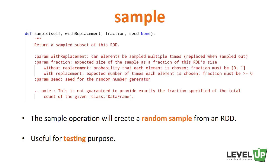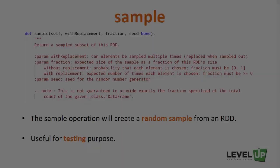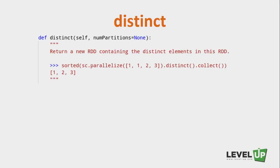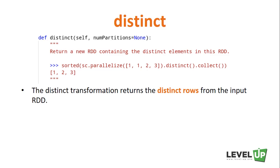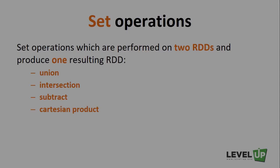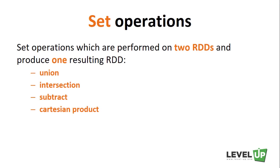The distinct transformation returns only the distinct rows from an input RDD, removing duplicates. Keep in mind that distinct is quite expensive because it requires shuffling all data across partitions. Avoid using distinct if deduplication isn't necessary. There are also set operations performed on two RDDs: Union, Intersection, Subtract, and Cartesian product — all require that the RDDs being operated on are of the same type.